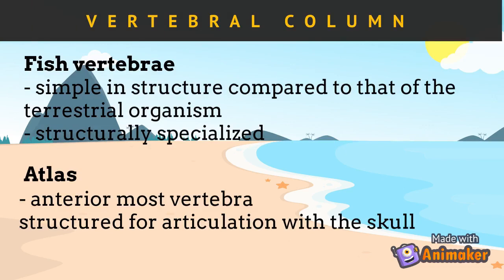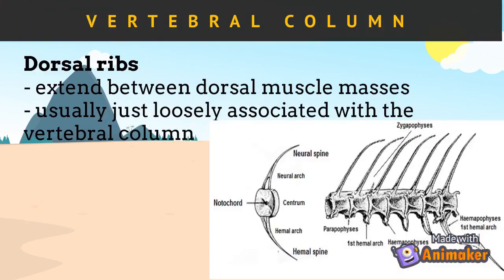The fish vertebra is simple in structure compared to that of terrestrial organisms and is structurally specialized for swimming. A component of the vertebrae, the atlas, is the anteriormost vertebra — the vertebra found immediately after the skull. The atlas is articulated or fitted with the skull. Dorsal ribs are ribs found in the upper portion of the vertebral column near the dorsal fins. These extend between dorsal muscle masses and are usually just loosely associated with the vertebral column.